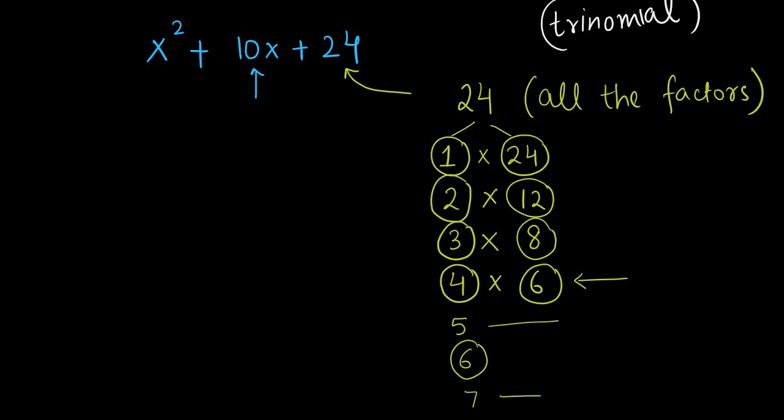Now we need to make 10, the middle term itself, 10. We need to make 10 using the factors, the pair of factors. Now 2 and 12.